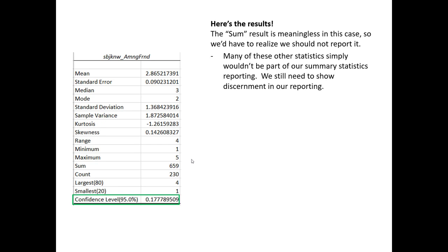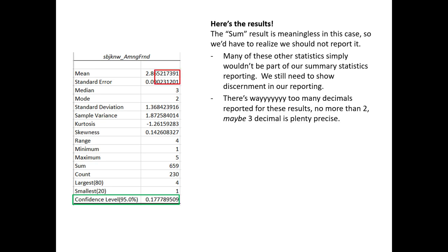Many of these summary statistics that we get out of the Data Analysis ToolPak might not make it into our final reporting. Just because it's there in Excel, we as analysts have to make a good judgment about whether it's useful for a final report. Also, there are just way too many decimal points. On a five-point Likert scale, reporting things to the eighth decimal point is not providing any meaningful precision. Maybe to the third decimal point is appropriate, but in reality we just stick to the first or second decimal point for these types of scales when reporting.